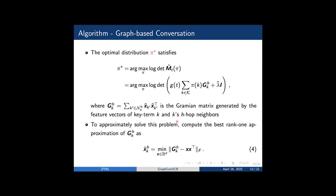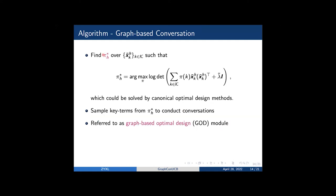We approximately solve this problem by first computing the best rank one approximation of GHK in terms of the F-norm of the matrix GHK. Then we find the optimal distribution pi star H over tilded X KHK such that pi star H maximizes the determinant of this term. This pi star H can be solved by canonical optimal design measures. Our agent will sample key terms from pi star H to conduct conversations. We refer to this as the graph-based optimal design module.